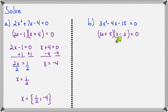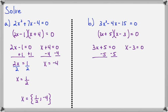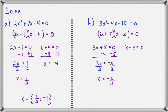Now if this times this is 0, one of the factors must be 0. If 3x plus 5 equals 0, that gives us one solution. If x minus 3 equals 0, that gives us the other. To solve 3x plus 5 equals 0, we subtract 5 from both sides and divide both sides by 3, giving us x equals negative 5 over 3. For x minus 3 equals 0, we add 3 to both sides and get x equals 3. So our solutions are x equals negative 5 thirds or positive 3.